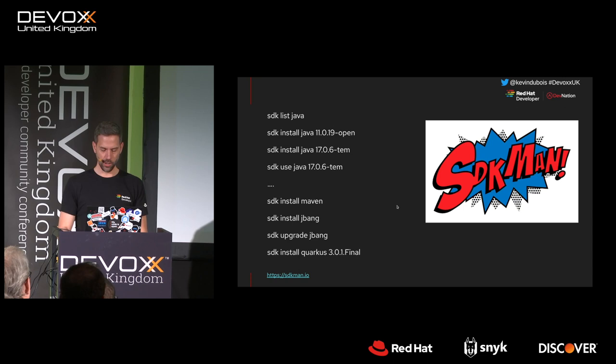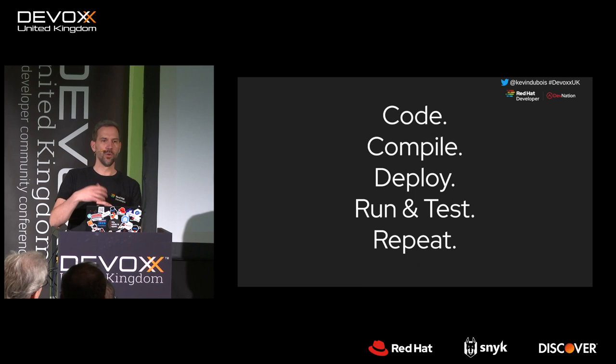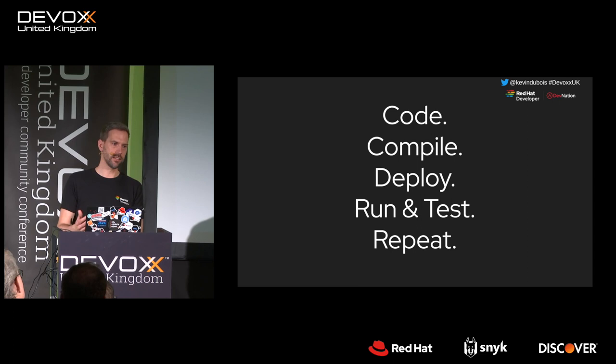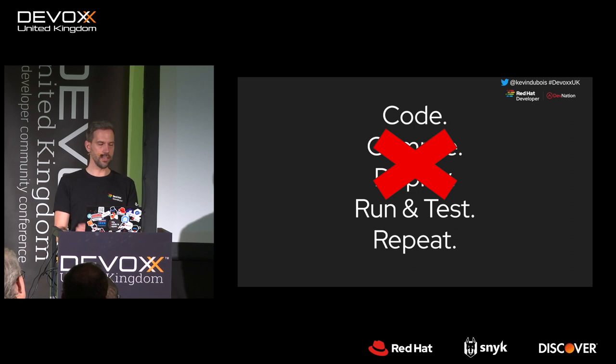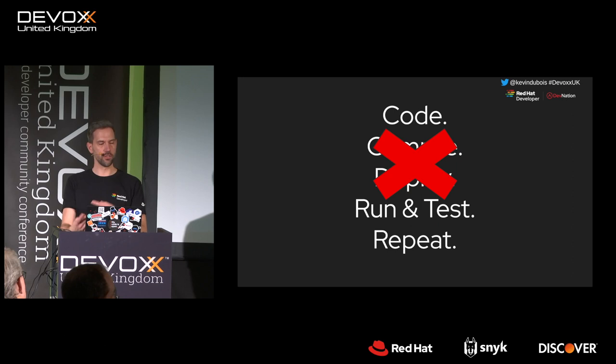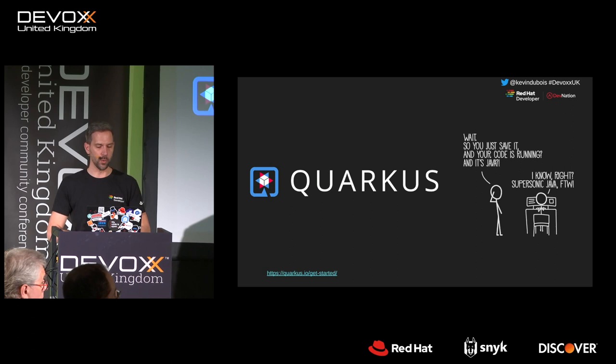When we're coding, the annoying part is that we typically need to compile, then deploy, then run, then test — and repeat. That's not so fun. But there are a few projects that make this simpler by cutting out manual compilation. You just write your code, run, and test, and you have a much faster feedback loop. When things are more fun, we're more productive. Quarkus is one of those projects that does this really well.